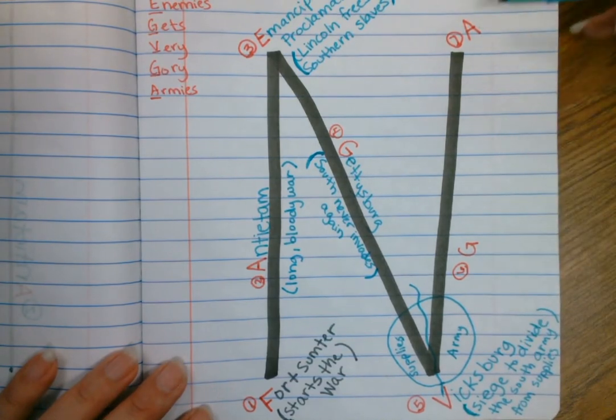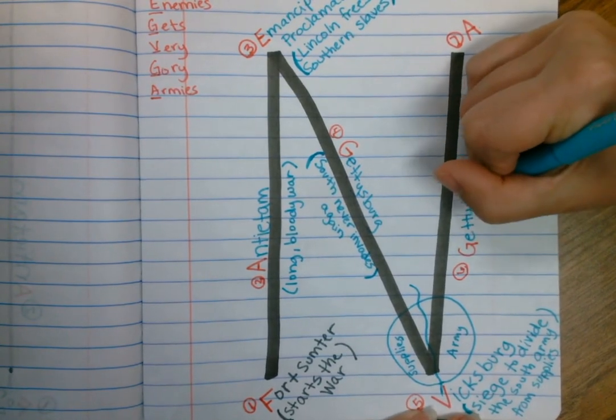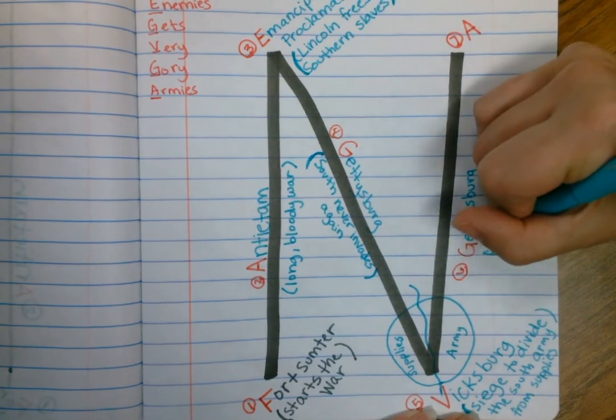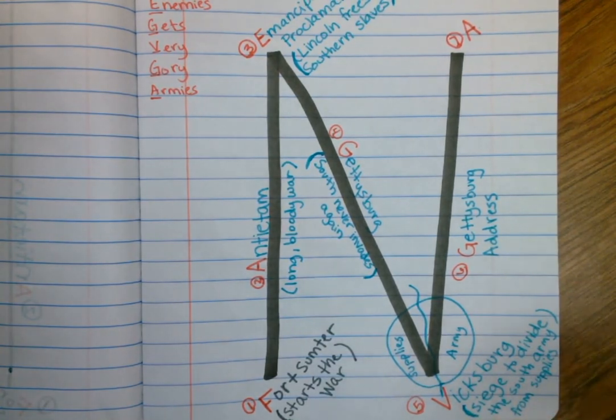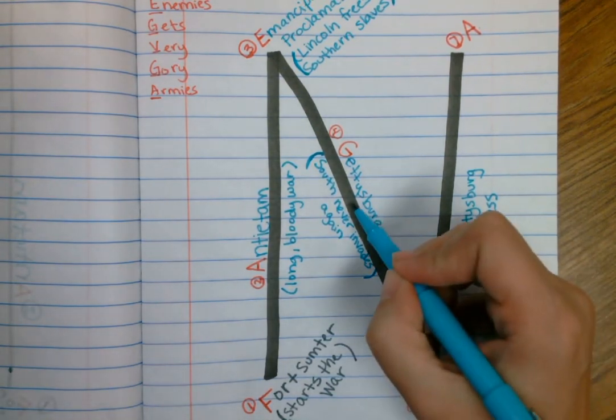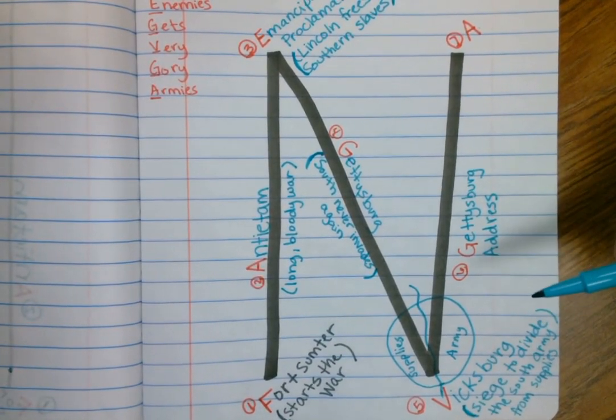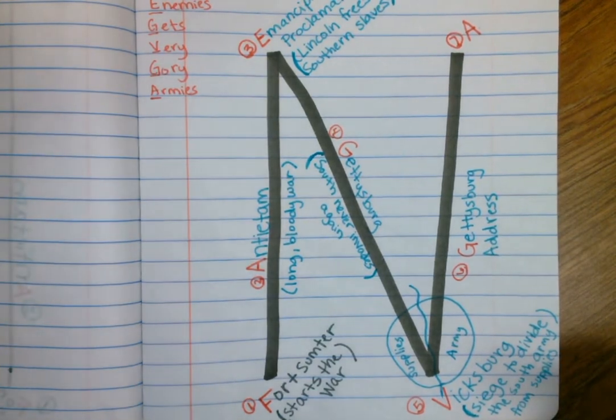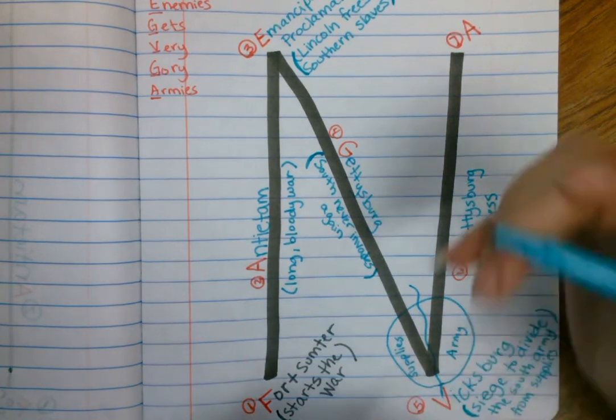So we're working our way up to a Northern victory. Number six is going to be the Gettysburg Address. This comes a few months after the Battle of Gettysburg. Abraham Lincoln is asked to help dedicate a cemetery to those men who lost their lives. It is at the Battle of Gettysburg. It is at the same place that it was fought because so many men had died that they just kind of buried them right there. And so Lincoln is asked to come out and give a speech.